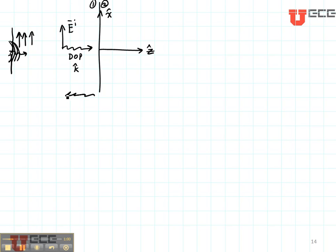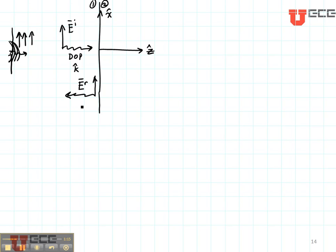When the wave hits the boundary, it's going to reflect. The reflected field is going to be going in the minus Z direction. The orientation of the electric field — its polarization — stays the same. So there's my reflected field with a negative Z direction of propagation.